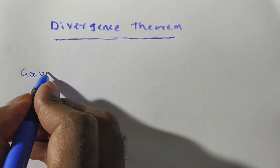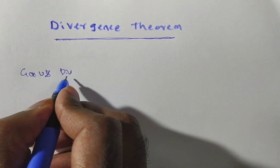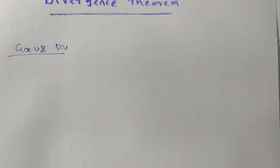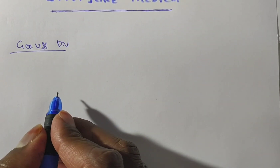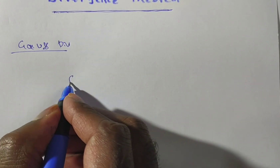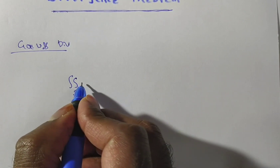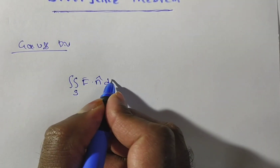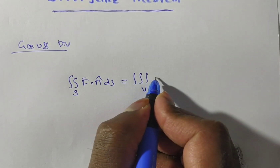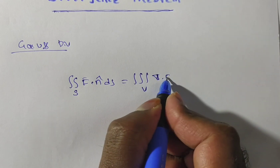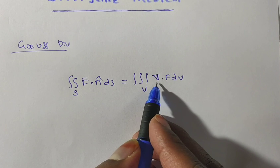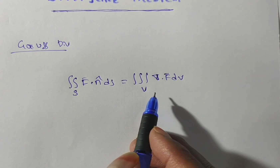Before writing the statement directly, I will write the formula first, and based on the formula we will write the statement. The Gauss divergence theorem formula is: the integral over surface S of F-bar dot n-bar dS is equal to the integral over volume V of del dot F dV, also called the divergence of F-bar dV.